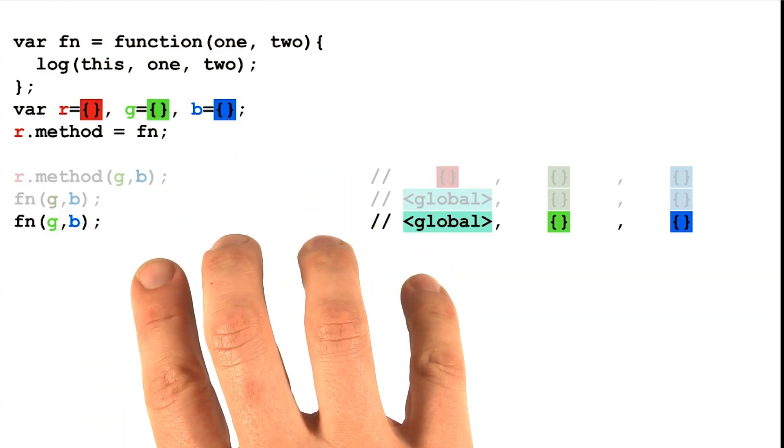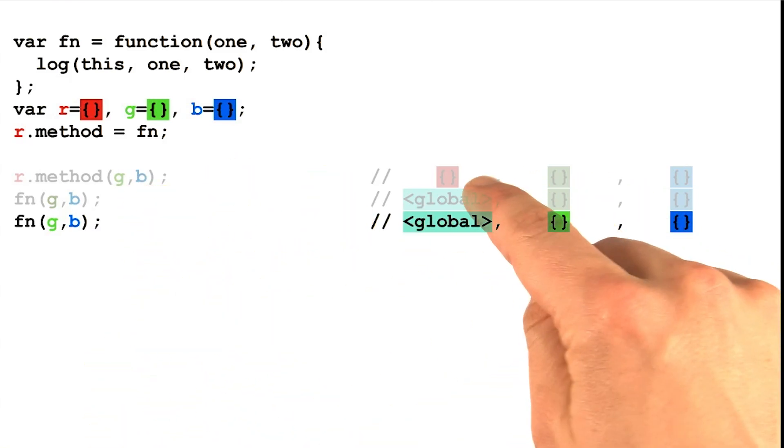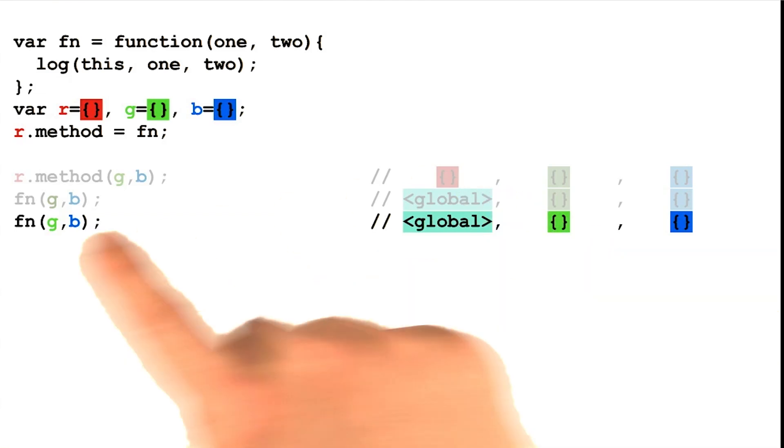Let's make a copy of that previous line, which had the effect of assigning global as the default binding for this. And we'll edit the line with an attempt to specify exactly what we'd like this function to bind the keyword this to.